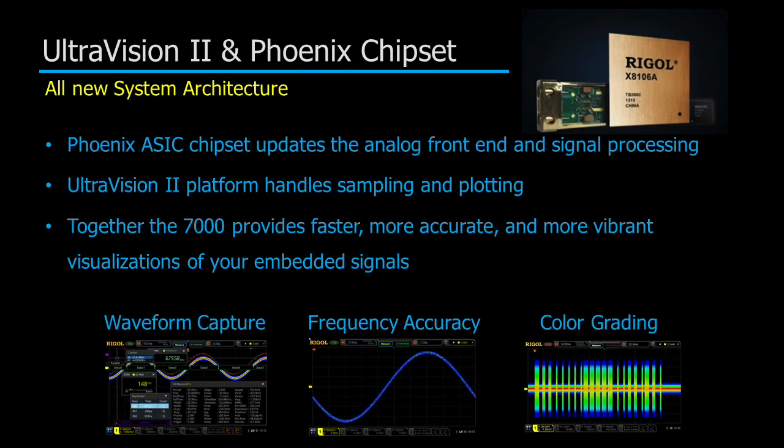UltraVision 2 and our new Phoenix chipset make an all-new system architecture for the 7000 series oscilloscope that provides advances in a number of important characteristics for the scope.